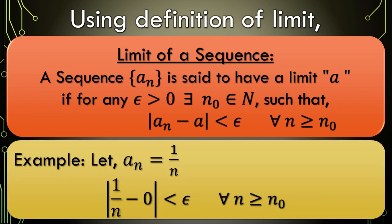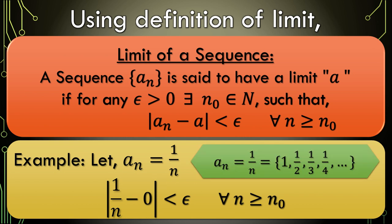Let me explain with an example. Looking at the sequence 1/n, you can see it gets closer and closer to 0 as n increases. So even if we take epsilon as 0.009, there must be values of 1/n that are smaller than 0.009 as we increase n, so we can easily find n_0, and we say 0 is the limit of this sequence. I hope you get the gist.